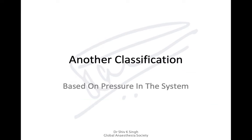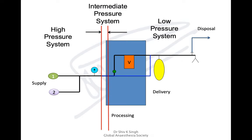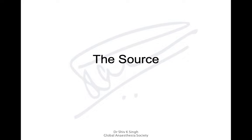There's another classification based on pressure within the system. The high-pressure system includes the VIE pipelines and cylinders. The intermediate-pressure system includes the second-stage regulator. The low-pressure system starts from the flow meters onwards to the patient end.